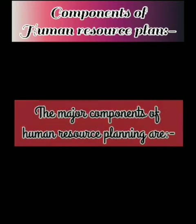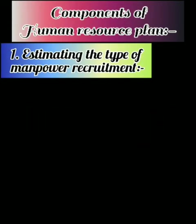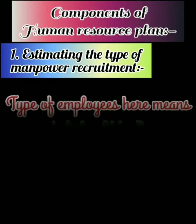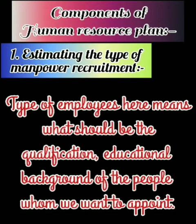Number one: estimating the type of manpower recruitment. Human Resource Planning begins with the estimation of manpower recruitment, which means finding out the number and the type of employees needed by the organization. Here, type of employees refers to the qualification and educational background of the people we want to appoint.